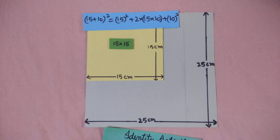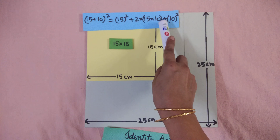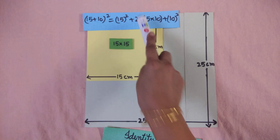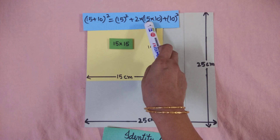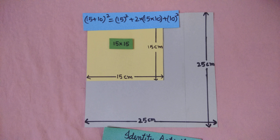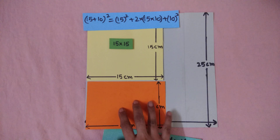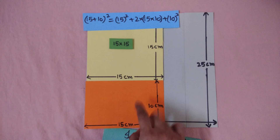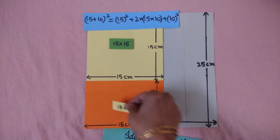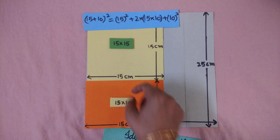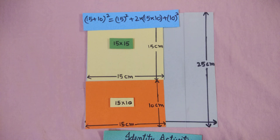Now 2 times 15 times 10 means I have to take 2 pieces with dimensions 15 by 10. What should be the shape of 15 by 10? It should be a rectangular piece. So one 15 by 10 rectangular cutout — you will take it and keep it here.